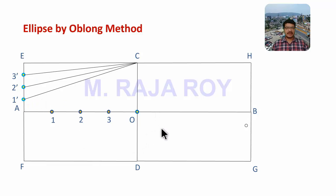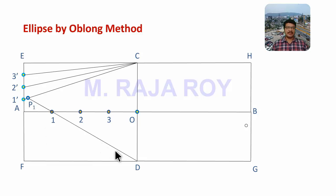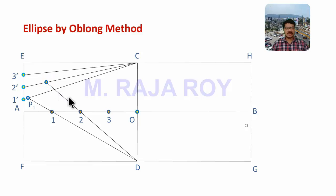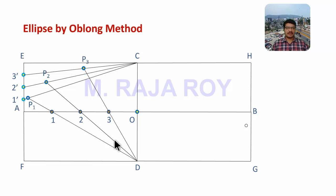Draw a line joining D1 and extend it until it touches the C1 dash line. This intersection point is called P1. Then repeat the same procedure for points 2 and 3. Draw a line joining D2 and extend it until it touches the C2 dash line — this intersection point is P2. Draw a line joining D3 and extend it until it touches the C3 dash line — this intersection point is P3. Joining A, P1, P2, P3 and C gives one fourth of the ellipse.